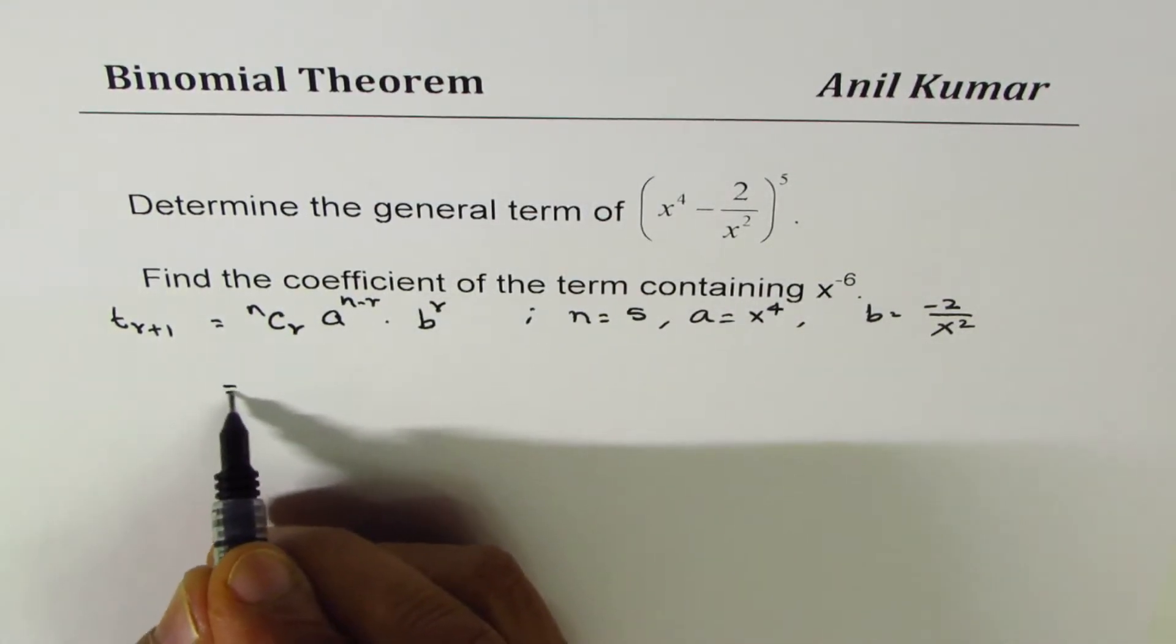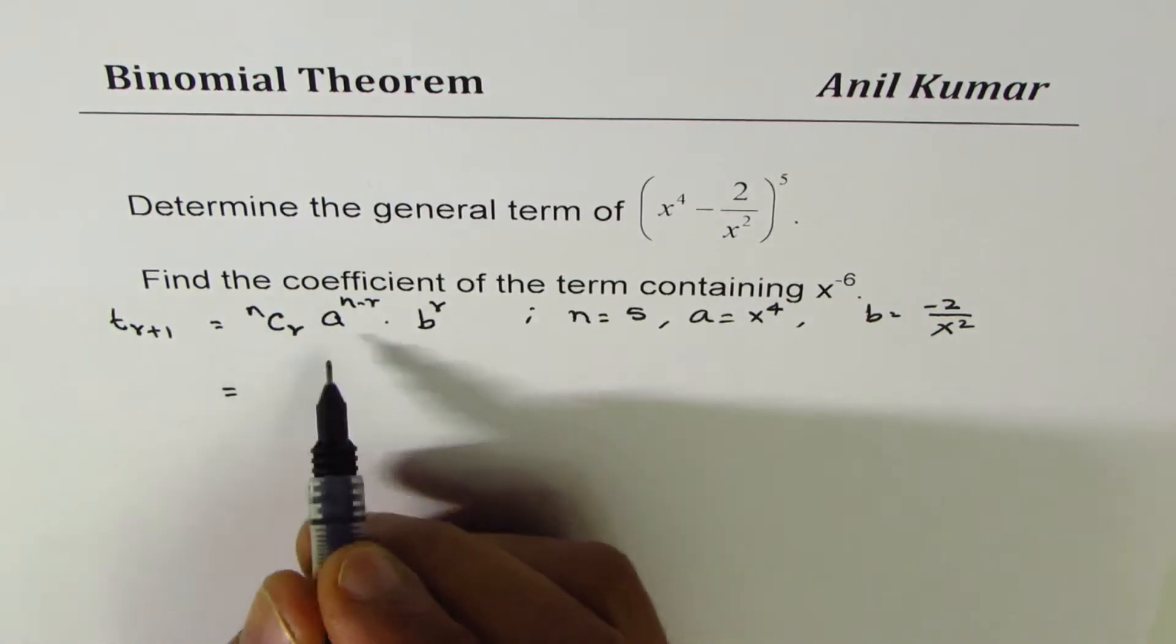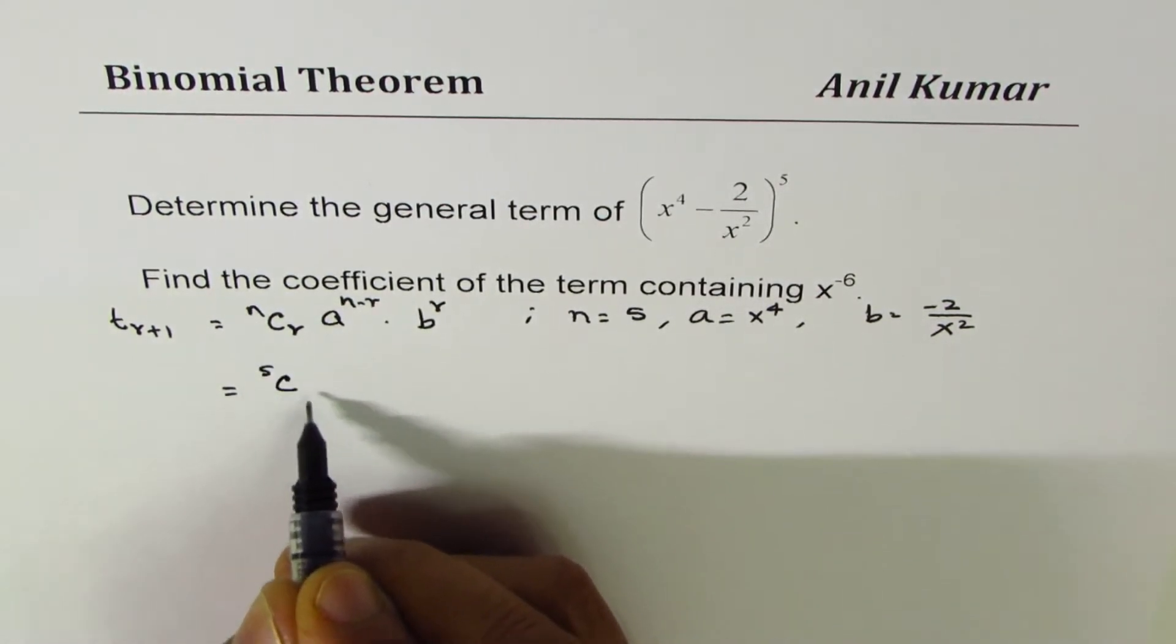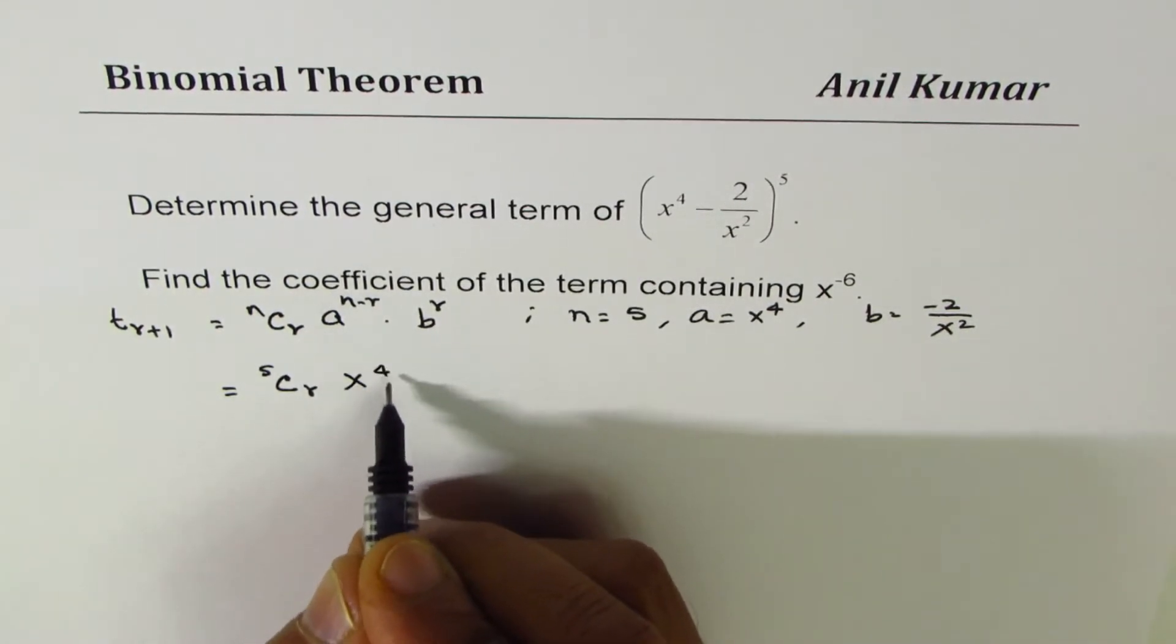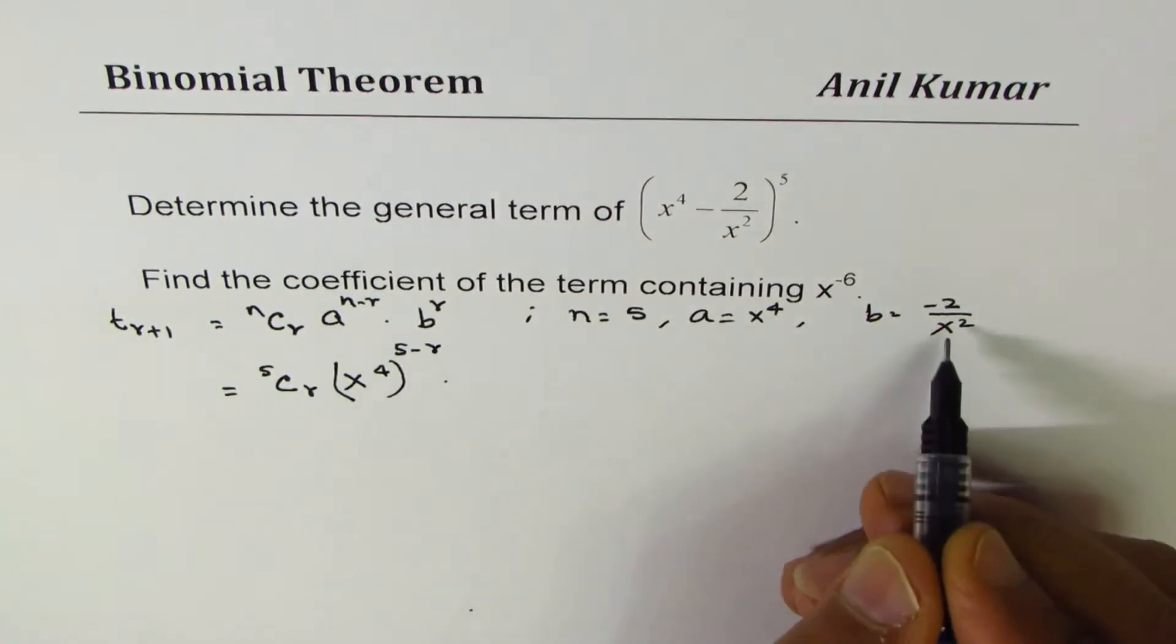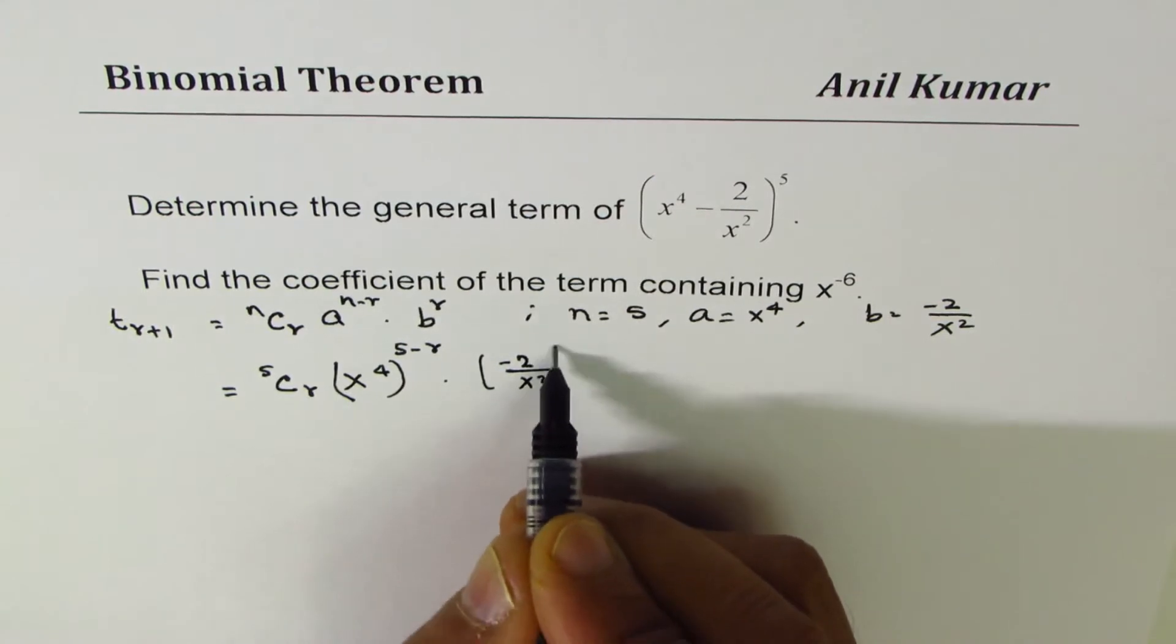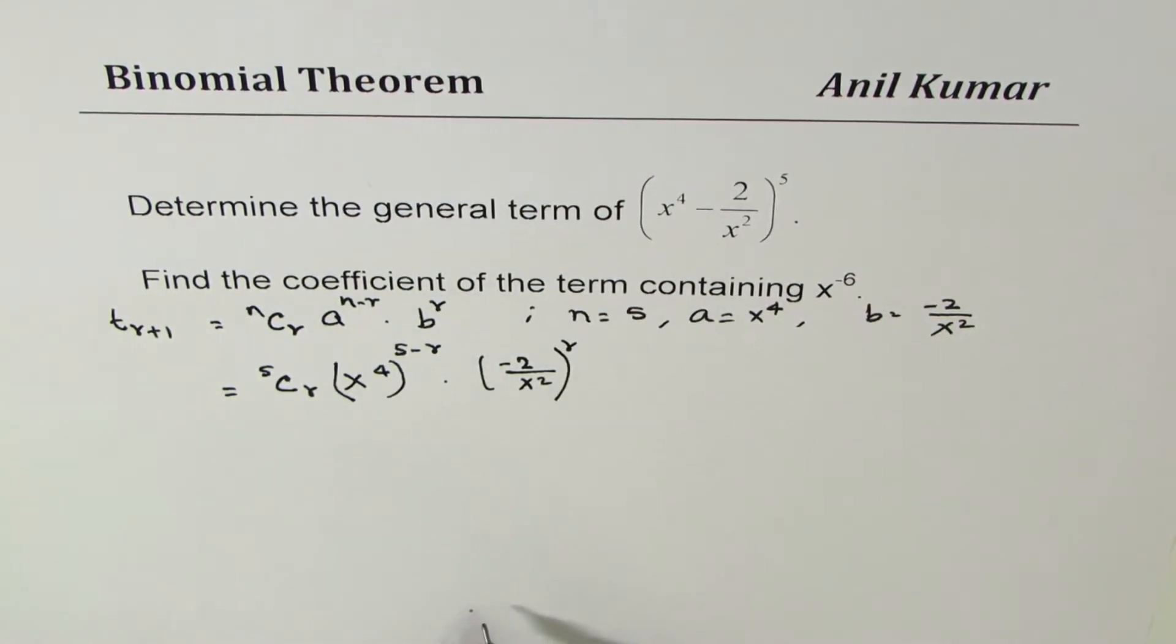Now let's write down its expansion. So this 5 is n, so we get 5Cr. a is x^4, x^4 to the power of n is 5, 5 minus r. b is -2/x^2 to the power of r, so that becomes the general term for us.